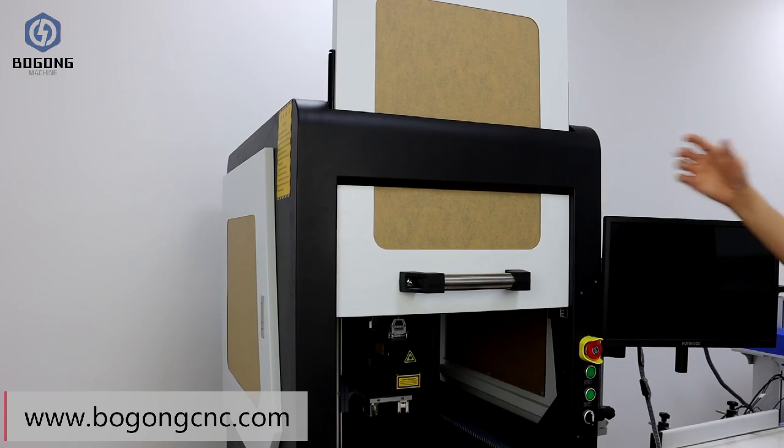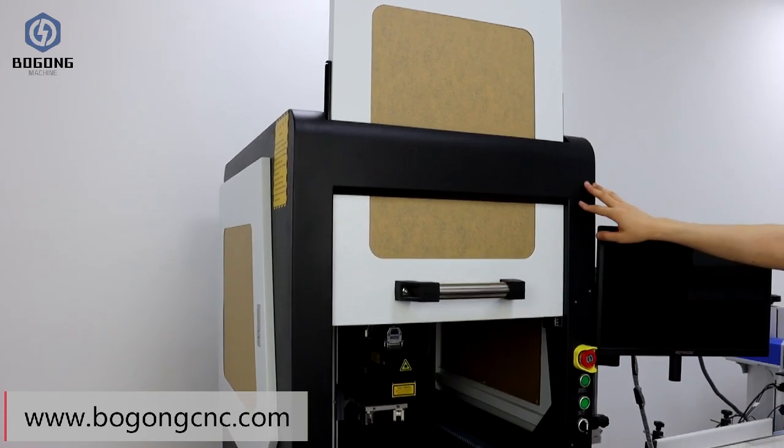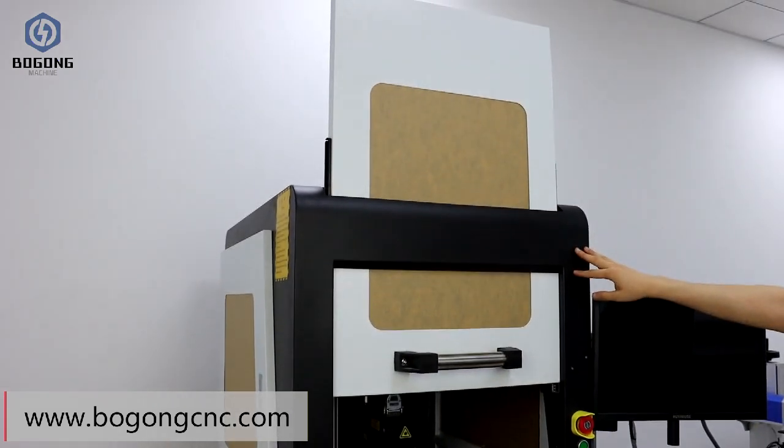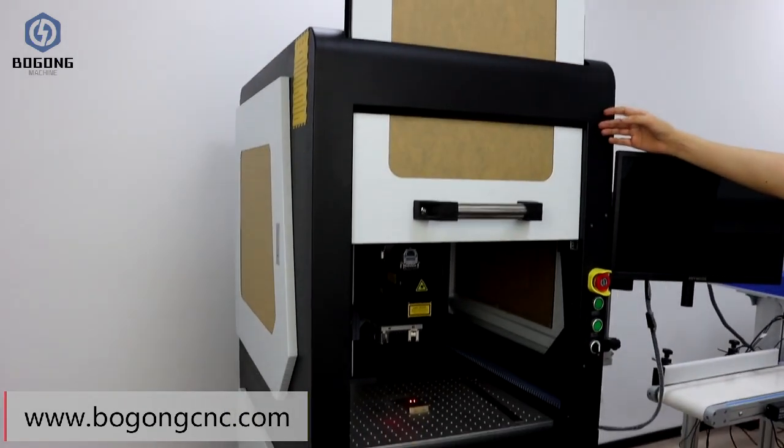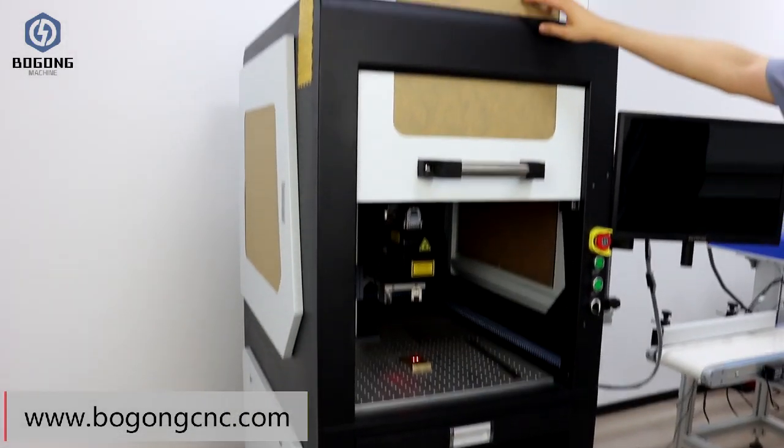First, let's take a look at its appearance. This is a sealed machine, so the whole machine is made of sheet metal protective shell and acrylic protective plate.